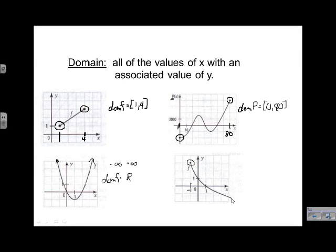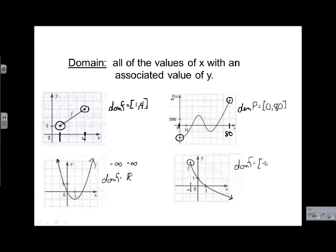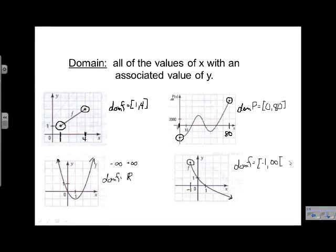Going to the right, we can see it continues off the graph, meaning it'll go all the way to positive infinity. So DOM of f equals our lowest value of negative 1 and our highest value of infinity. I'll use a square bracket on the left but an open bracket pointing away from the infinity sign on the right. That shows we can never actually equal infinity, so we use an open bracket there, but negative 1 is included so it's closed.